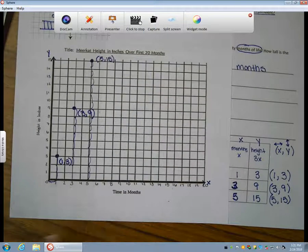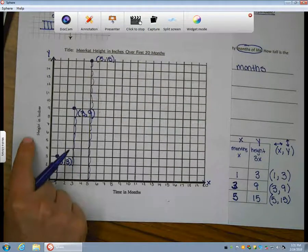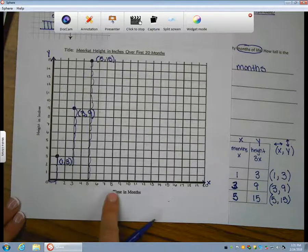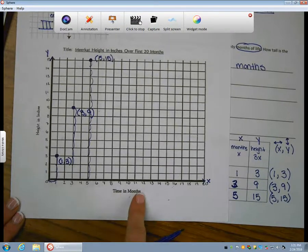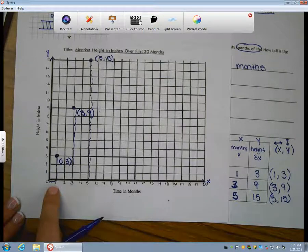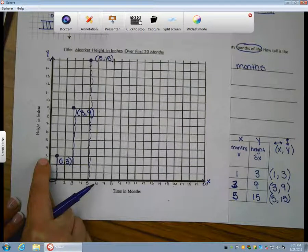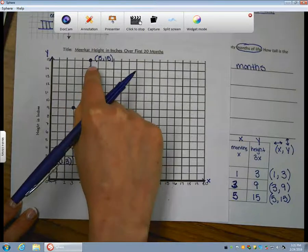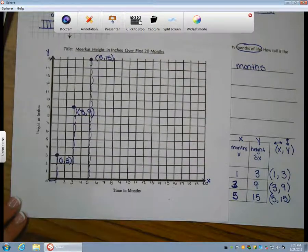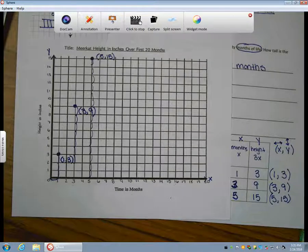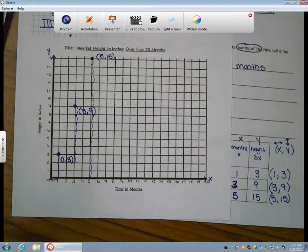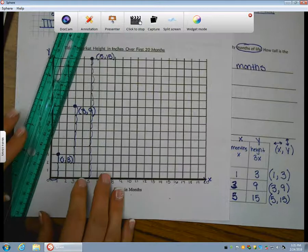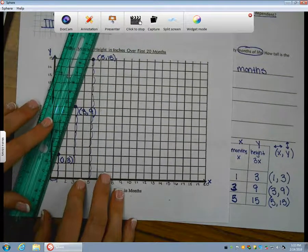Now, I've plotted the way that my height of the meerkat is changing over the time in months. I can see that in one month, the meerkat is 3 inches tall. In five months, it is 15 inches tall. I can see this by reading the graph. The next thing that I want to do is take a ruler, and I'm going to connect those points. It's important to use a ruler. We want to be as neat as possible. Let's align up these points.